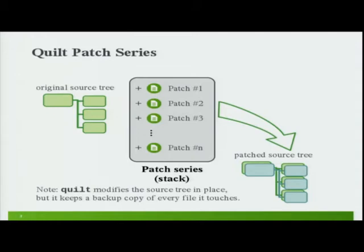In practice, this is what it looks like. You have an original source tree with original files. On top of that you add a patch series, which is basically a simple text file that tells you in which sequence and order patches must be applied. And the result is a patched source tree — not only the original files but every change you wanted done, thanks to the patches you added.